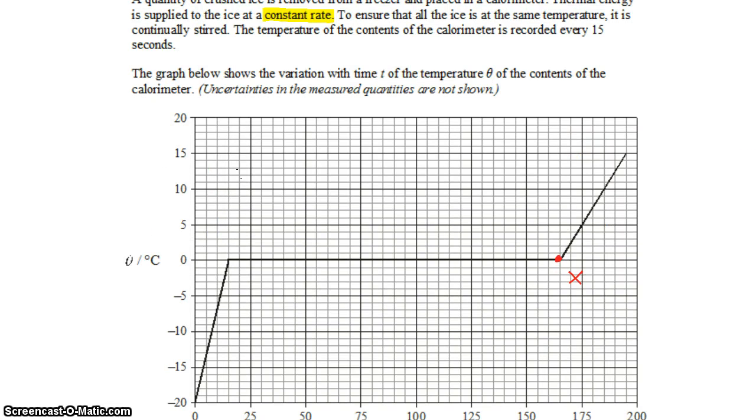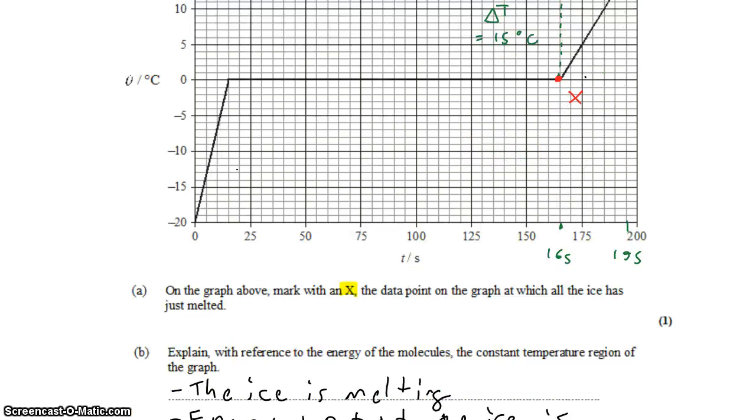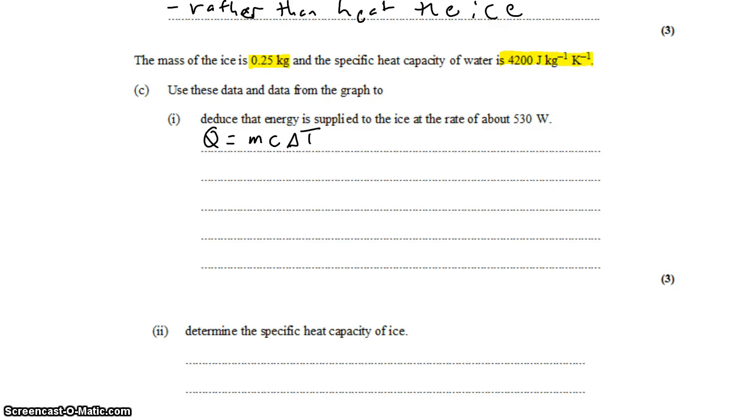And we know we can find out about the rate. Because if we look at this region here in which the water is increasing in temperature, we can find a change in temperature and a change in time. The change in temperature goes from 0 to 15. That's 15 degrees Celsius. And the change in time goes from 150, 155, 160, 165 to 195. Or that's a change of 30 seconds. So if we look at this change in temperature, it occurs over a time of 30 seconds.